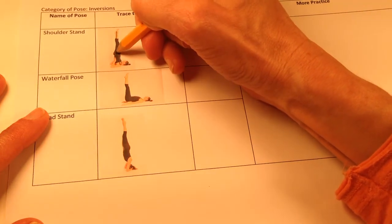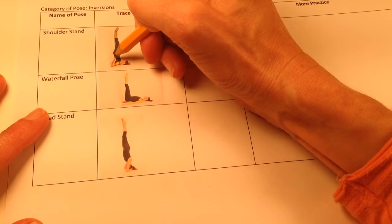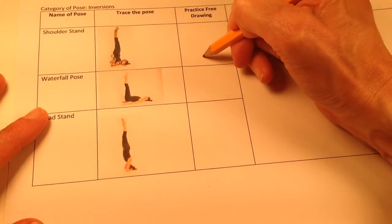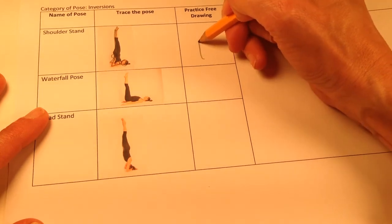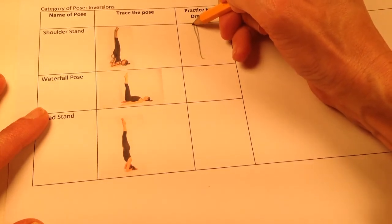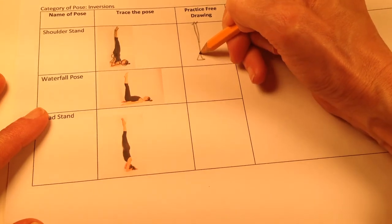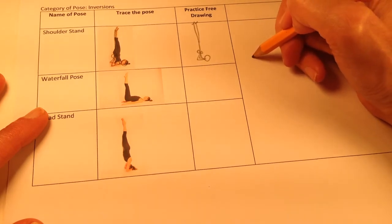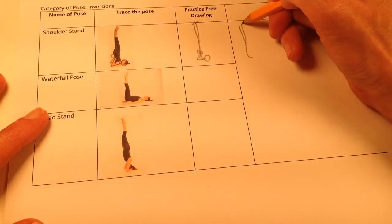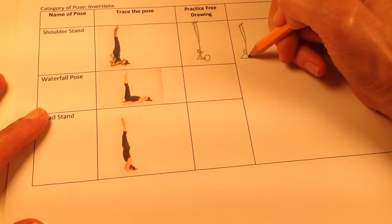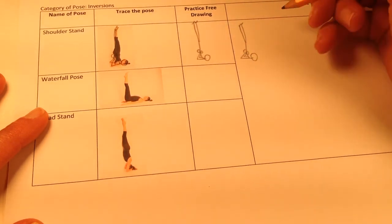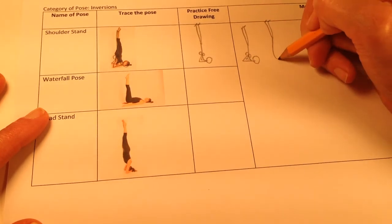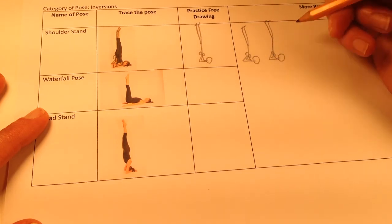Torso, legs, feet, each arm, hands, and head. Each arm, hands, and head. Torso, legs, feet, each arm, hands, and head. Add the arms and head. Torso, legs, arms, and head.